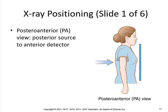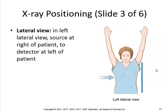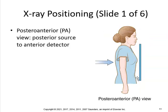Definitely know x-ray positioning. The PA view is posterior source to anterior detector — the x-ray goes from back to front. The PA view is the most commonly requested x-ray, so definitely know this. The AP view goes from front to back — anterior source to posterior detector. The lateral view has the source to the side of the patient and the detector at the left of the patient.